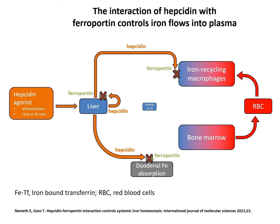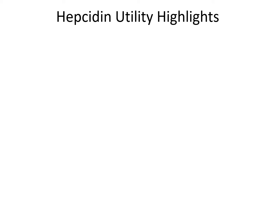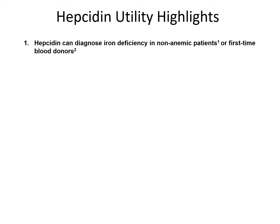Once the available iron is used up, iron-restricted erythropoiesis becomes stressed, causing a reduction in the number of new, mature red blood cells. As the master regulator of iron homeostasis, hepcidin levels can predict iron deficiency in non-anemic patients before hemoglobin dips below the anemic threshold. While the prevalence of non-anemic iron deficiency is hard to estimate, there are approximately 23.4 million Americans living with anemia, a number under-representing the iron-deficient population in the U.S.